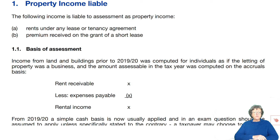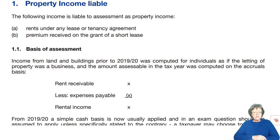Income from property is the rent that you received, either from a lease or from a tenancy agreement, and any premium that you receive on the grant of a short lease. Those are the two main assessable incomes.